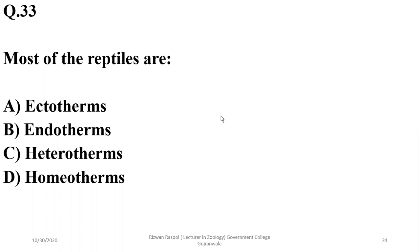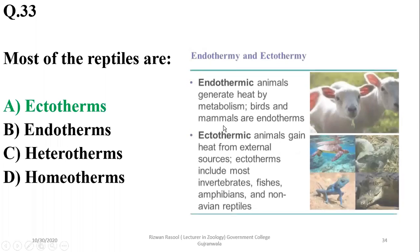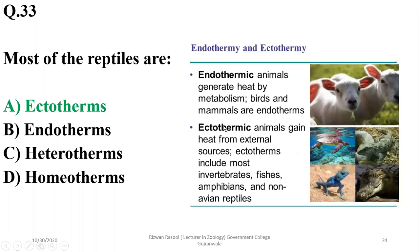Question thirty-two: most reptiles are ectotherms — they are dependent upon external sources for body heat or body temperature. Mammals, birds, and flying insects, by contrast, are endotherms.